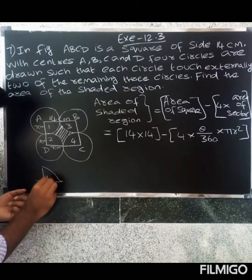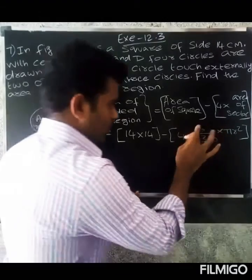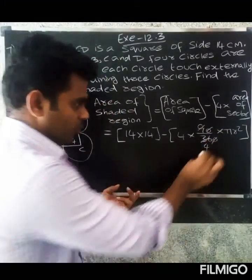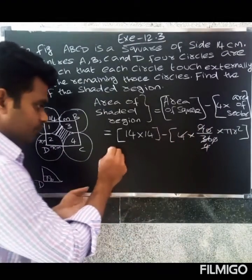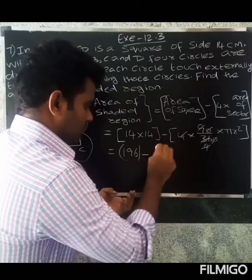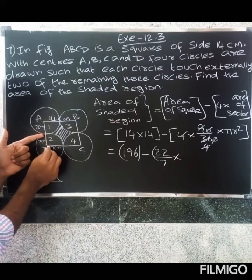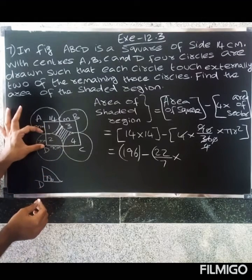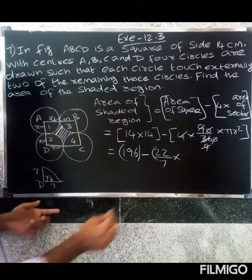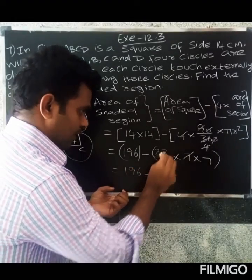Each sector has an angle of 90 degrees, since the corners of the square are right angles. So θ = 90°. Four nines make 36, and four sectors: 90/360 simplifies, the fours cancel. So we get 14² = 196. Using π = 22/7, and the radius of each sector is 7 centimeters — since the side is 14 cm, each radius is half of 14, which is 7 cm. So r² = 7 × 7 = 49.